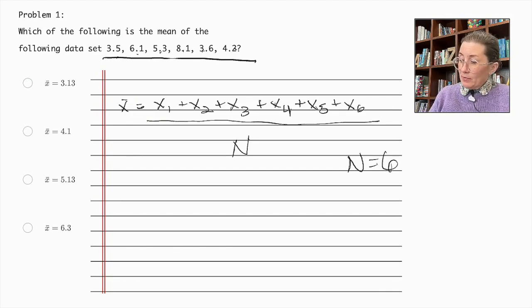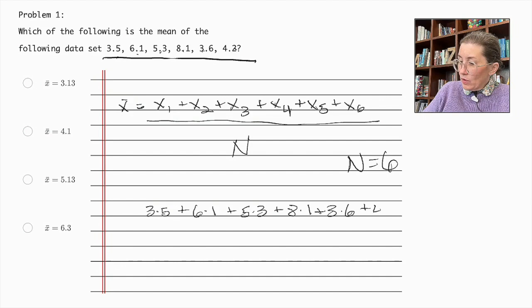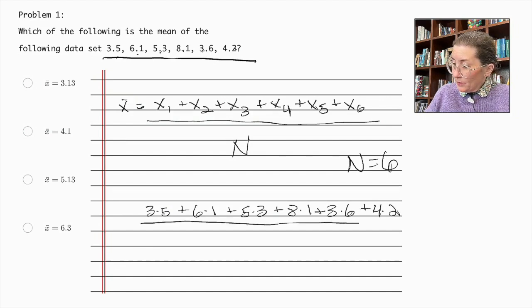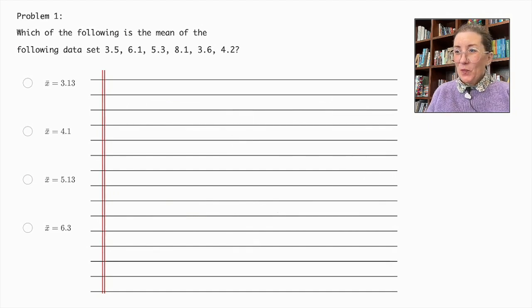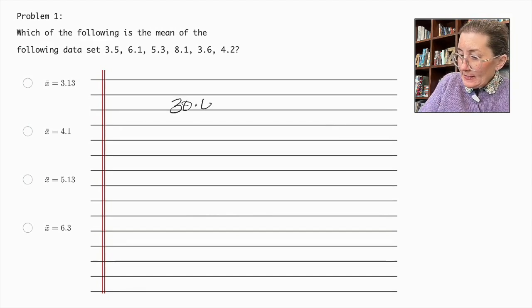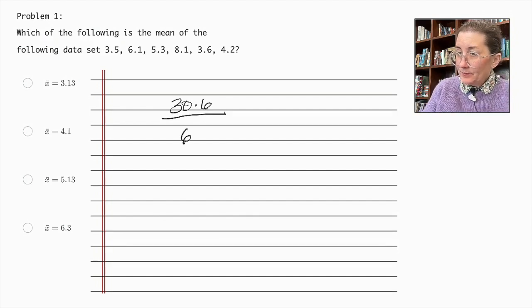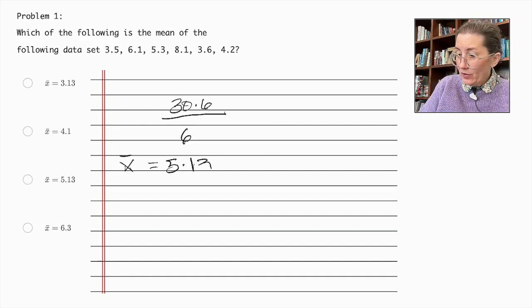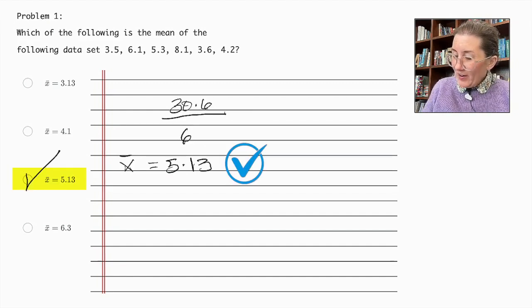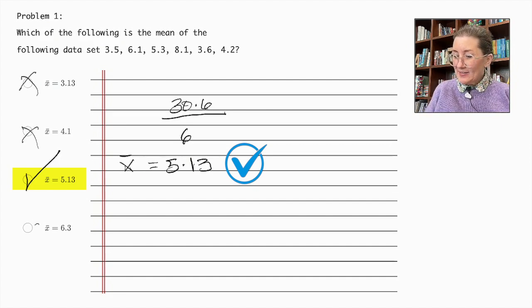So now let's plug those numbers in. 3.5 plus 6.1 plus 5.3 plus 8.1 plus 3.6 plus 4.2 over 6. Now we can use our calculator that we've been provided to add up the numbers and do the division. We end up with 30.6 over 6, and that is equal to, so the mean is equal to 5.13. We've got our answer right there. 5.13 is the correct answer.